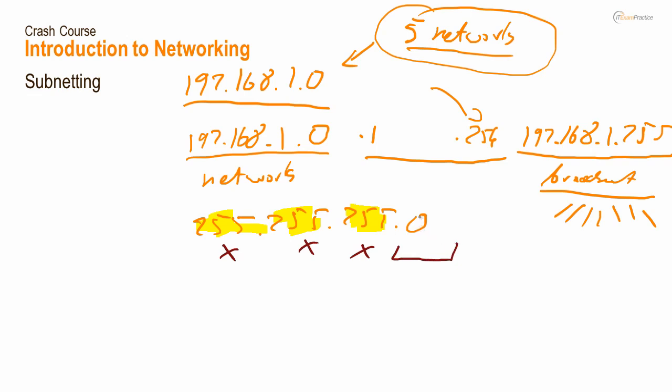And what you're going to do, you're going to take some bits, because it's in binary, and you will say, well, I will use them for my network. And of course, you will not end up having 254 hosts per network.